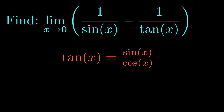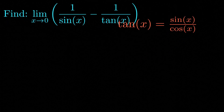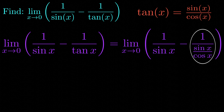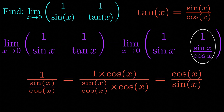Notice that tangent of x is equal to sine of x divided by cosine of x. This allows us to rewrite our limit as the limit as x approaches 0 of 1 over sine of x minus 1 over sine of x divided by cosine of x. We can rewrite the term on the right-hand side of the minus sign by multiplying the numerator and denominator by cosine of x, leaving us with cosine of x divided by sine of x.